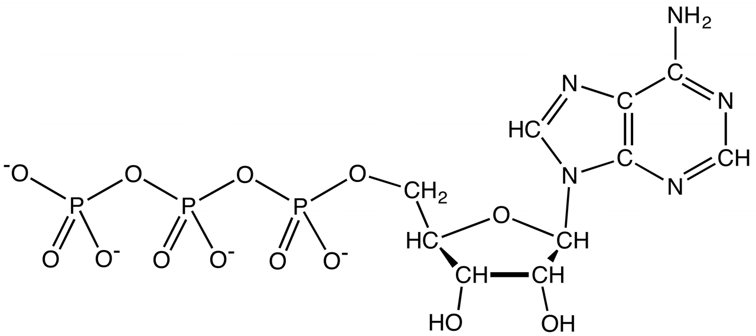This translocase is driven by the membrane potential, as it results in the movement of about 4 negative charges out of the mitochondrial membrane in exchange for 3 negative charges moved inside.